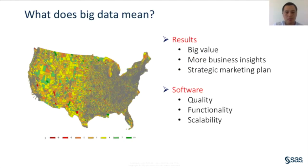My second question is about big data. In general, the definition for big data differs from one area to another. For example, big data could mean the number of observations is large, or the number of variables is large. Our goal is to realize big values from the data so that we can turn data into actionable insights. To uncover hidden values from big data, we need software packages with desirable functionality and scalability. In this tutorial, we will discuss some challenges posed by big spatial data and introduce two procedures for spatial econometric modeling.